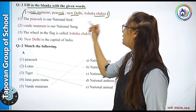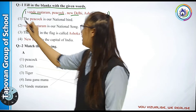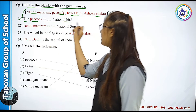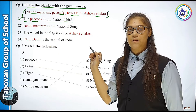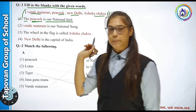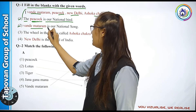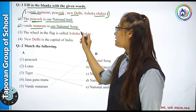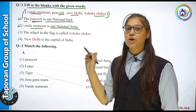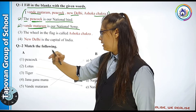These are the four given bracket words. First blank: our national bird. Our national bird — what will the answer be? Peacock. Second: blank is our national song. Our national song? Vande Mataram.